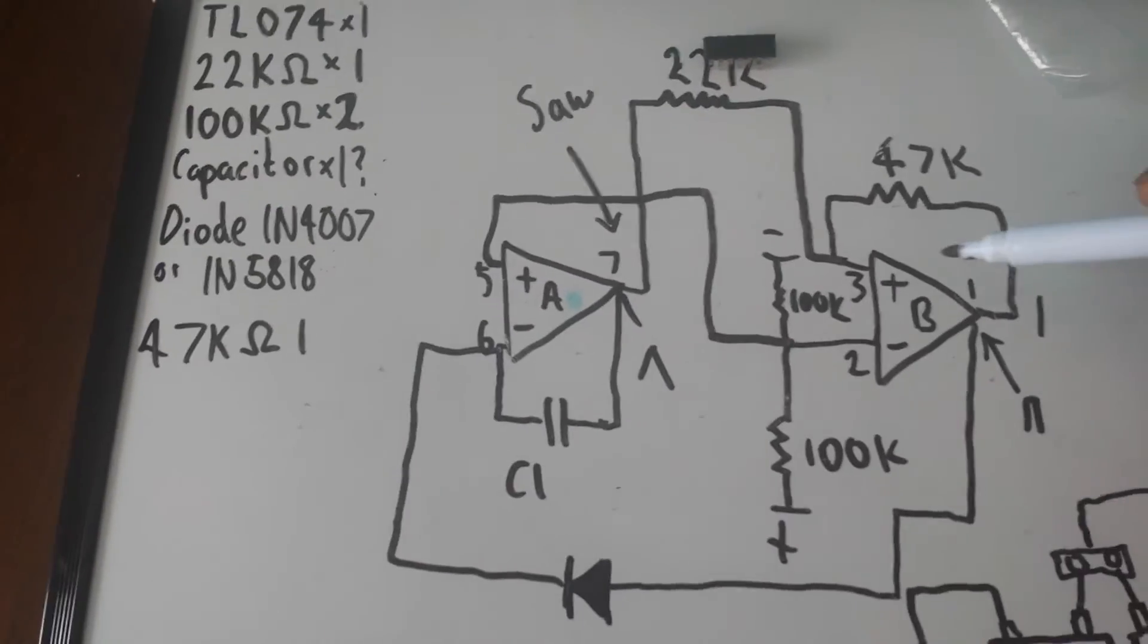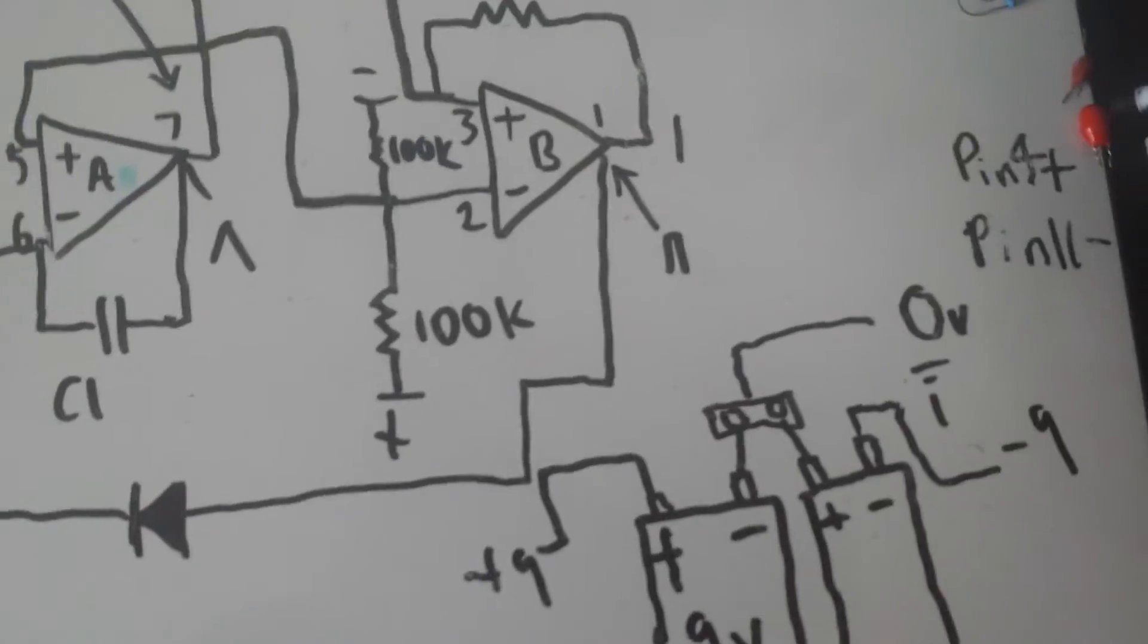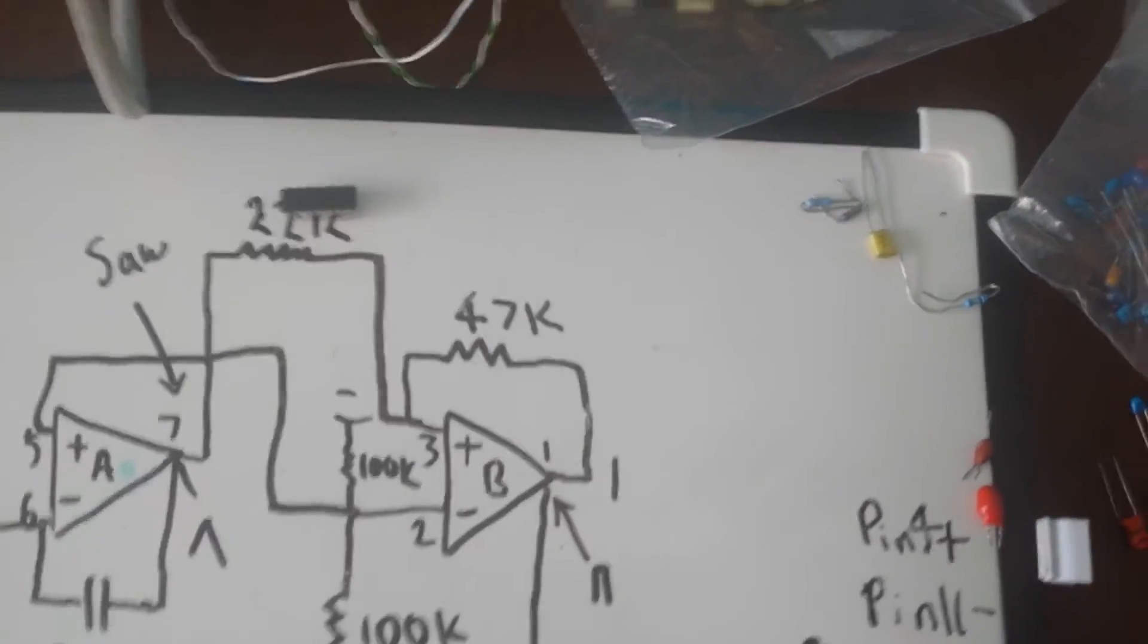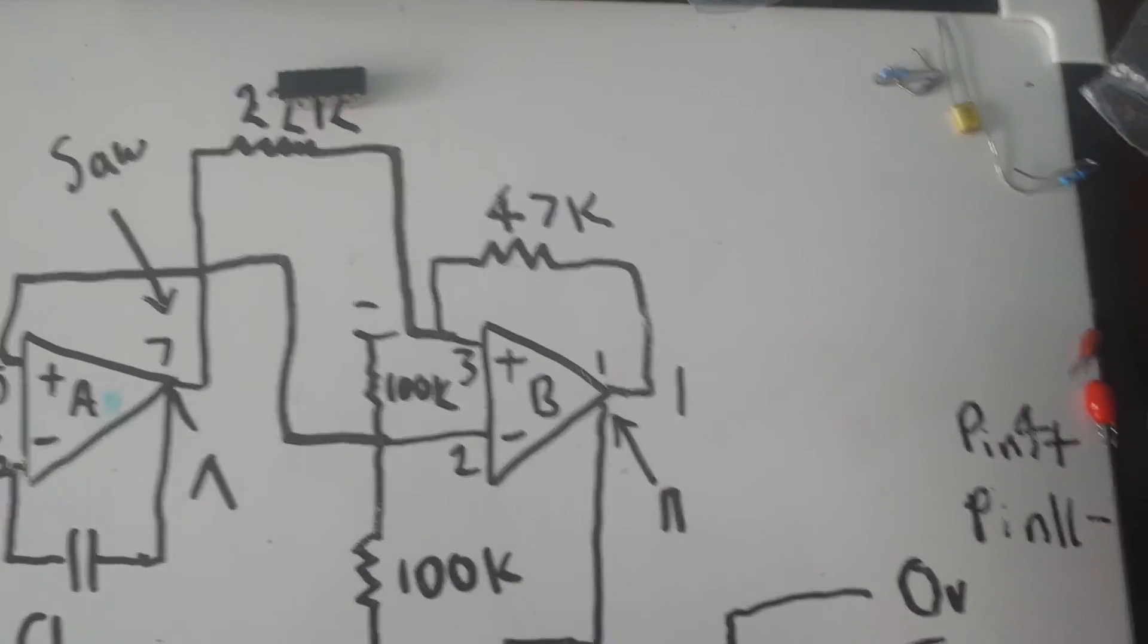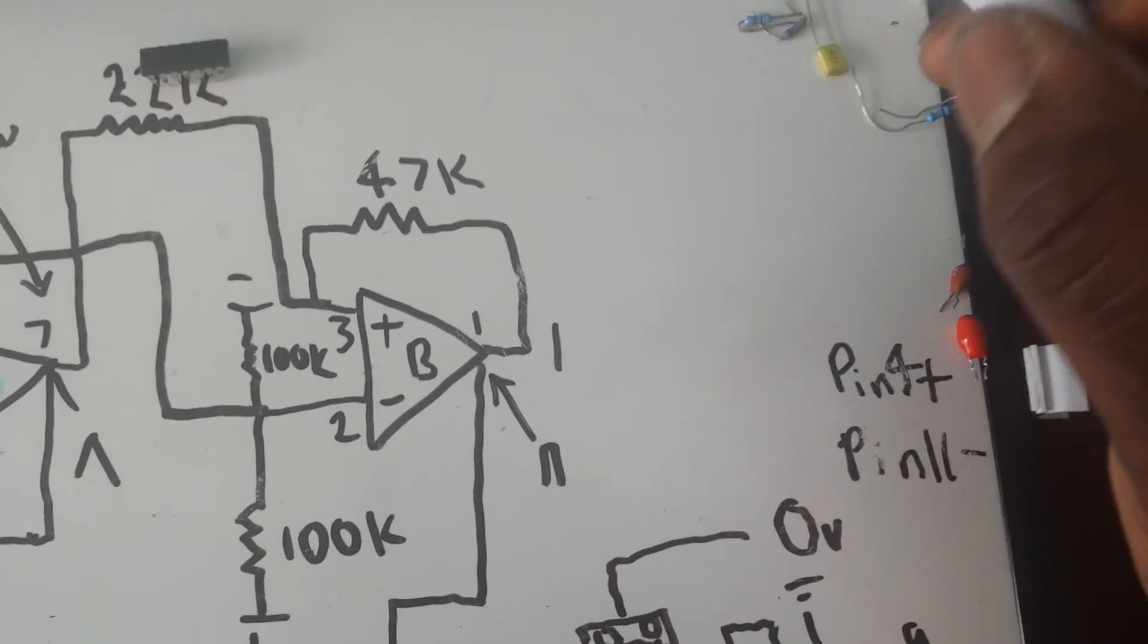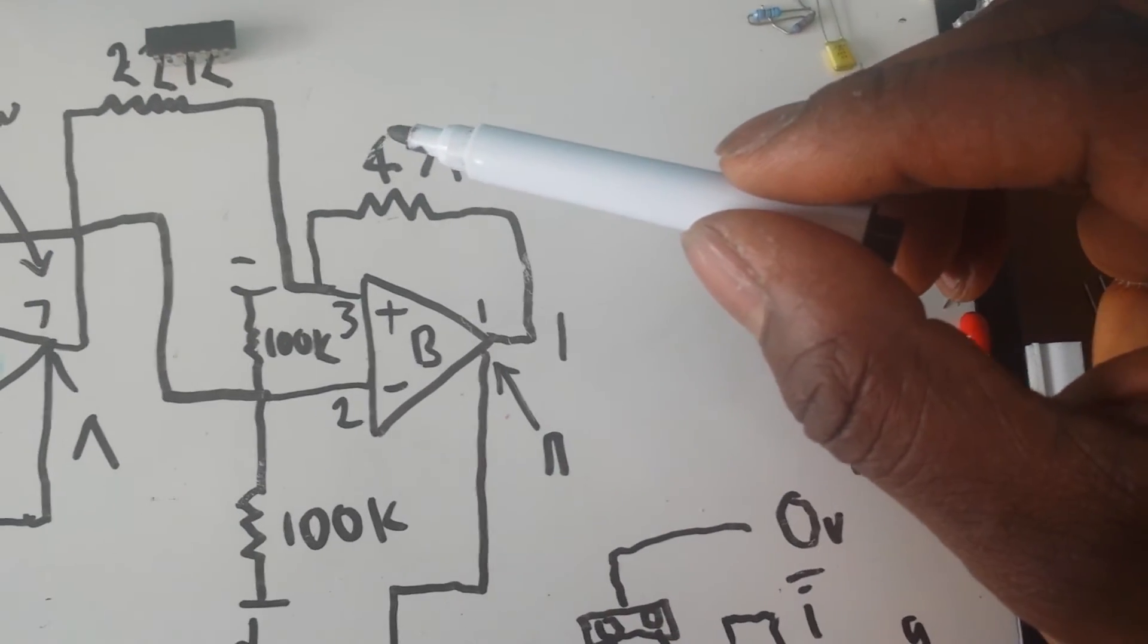From our op-amps again, I'm just going to remind you, if we're using a dual op-amp, say for instance something like the LM358 or the TL072, which are dual op-amps, you will need to connect pin 4 and pin 8 respectively.